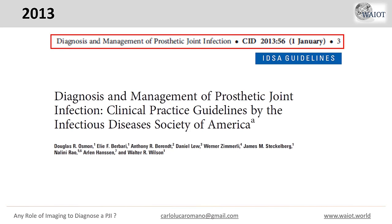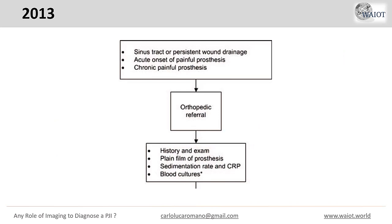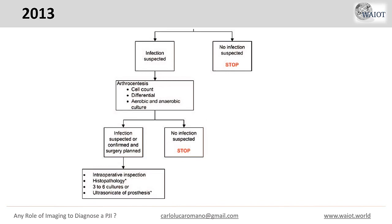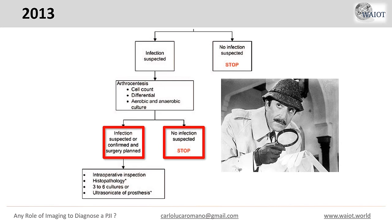In the same year, the Infectious Disease Society of America published its guidelines for the management of prosthetic joint infection. They also proposed an algorithm to diagnose PJI, and only mention plain film of the prosthesis. Their output is infection suspected or not suspected, and no role for imaging other than X-ray.